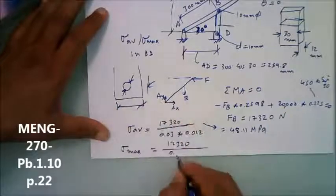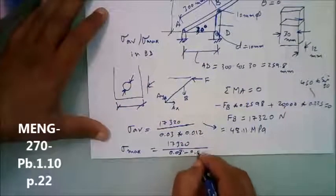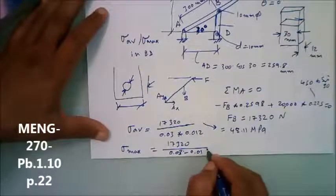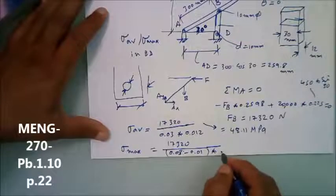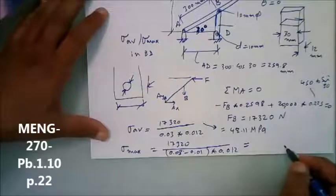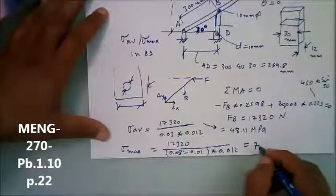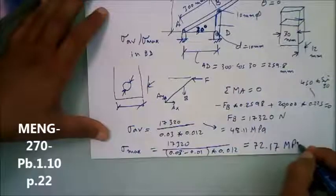30 minus 10, and then 0.03 minus 0.01 multiplied by, how much? 0.012. What would be this value? 72.17 Megapascal.